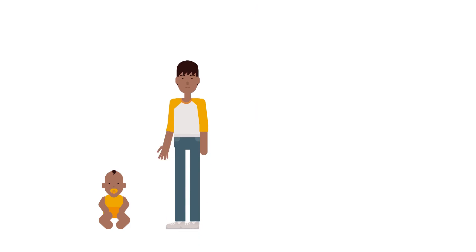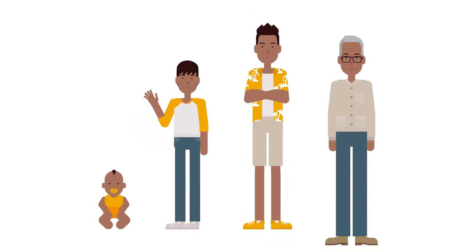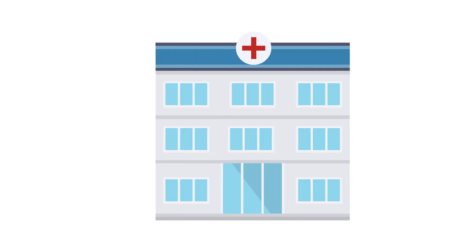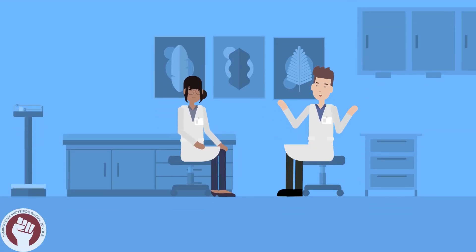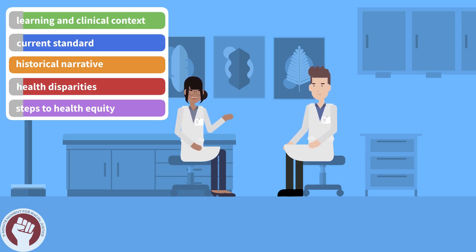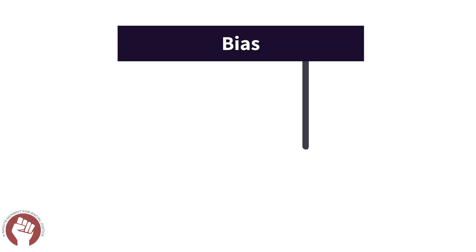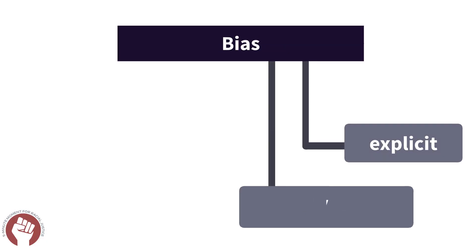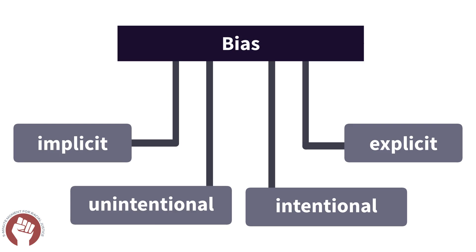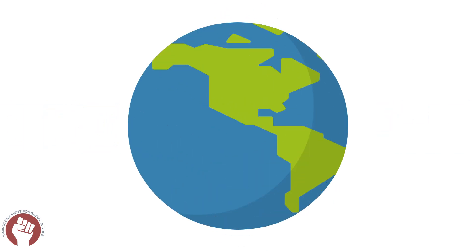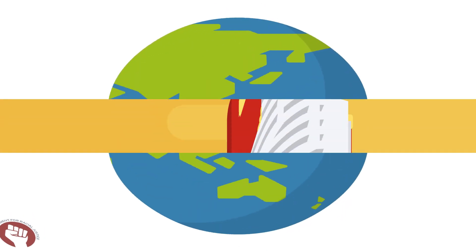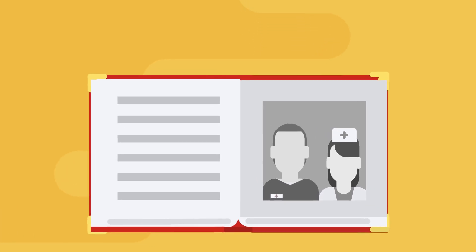In fact, racial differences in pain management are well described in children and adults across all ages and clinical settings. But why would race be a reason to treat someone differently when it comes to pain? This is a good point for us to talk about bias. Bias can be explicit or intentional, and it can be implicit or unintentional. Implicit bias happens without us consciously realizing it, and it impacts the way we think and make decisions about the world around us. This bias can come from many sources, even rooted in our history.